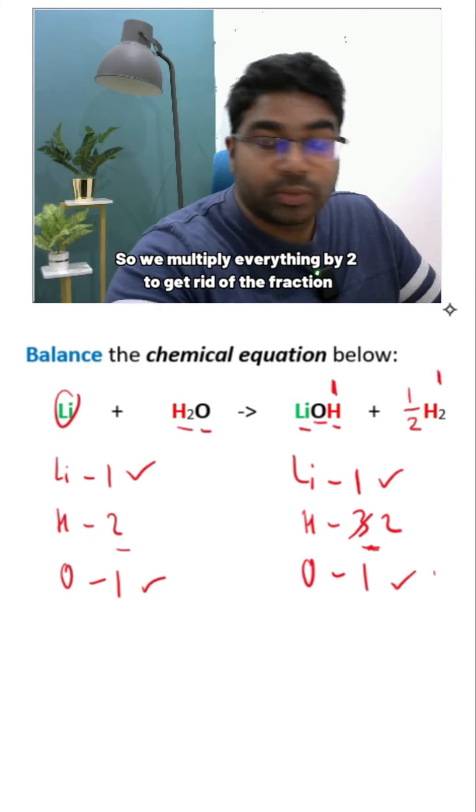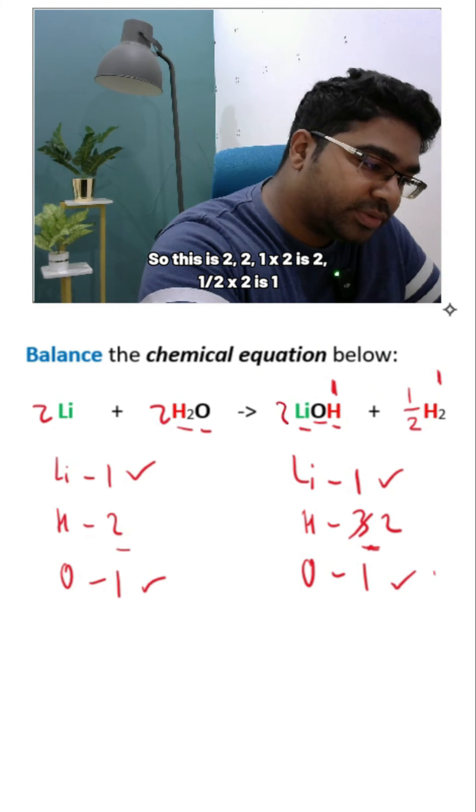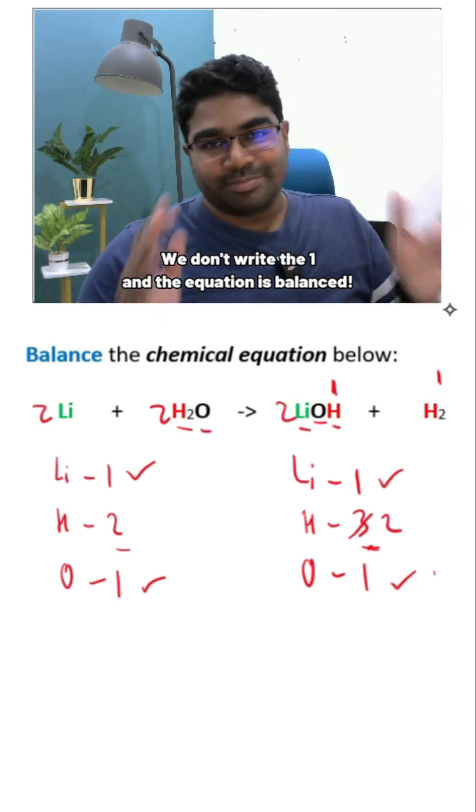So we multiply everything by two to get rid of the fraction. So this is two, two, one times two is two, half times two is one. And we don't write the one and the equation is balanced.